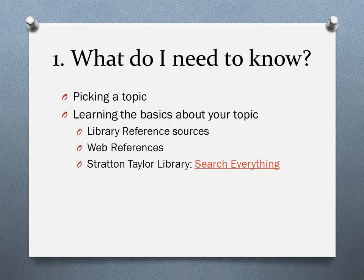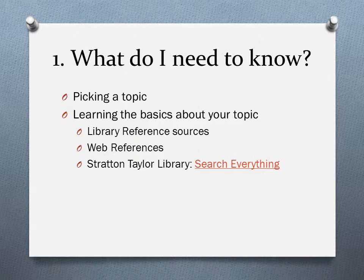How you pick a topic will vary by your major and even by your professor. You may have to come up with something on your own, choose from a list, or even have it assigned to you. If you're not sure about your topic or feel like you need to know more about it to even get started, don't worry. There are some great resources both on the web and in the library to help you out. First, there's the library's reference sources. You can either drop by the library to take a look at one of our many encyclopedias and general reference works, or try out one of our general purpose databases like Academic Search Complete. If you'd rather use the web, there's nothing wrong with that. There are some great reliable sites out there that can help you get started. The library's Search Everything tool will allow you to get a basic understanding of your topic, while at the same time identifying which of our many databases, books, and other resources will best suit your needs.